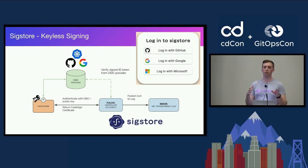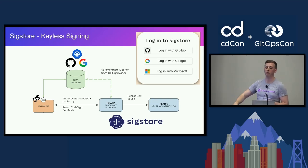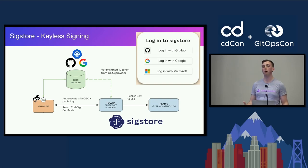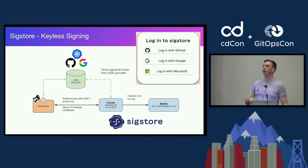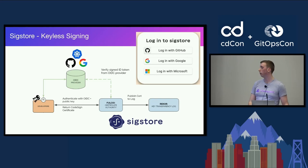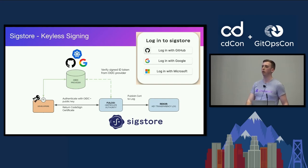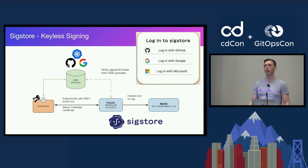You can sign whatever you want in that 10-minute window — git commits, OCI images. Then, whatever we sign is put on a service called Rekor, also part of the SigStore project. Rekor is a transparency log — an append-only, immutable store where we store signatures, usage, and certificates. Later on, even if a git commit was from months ago, we can query Rekor and ask: was this commit actually signed at this time? These are open source components you can run yourself, though the SigStore project also runs public instances for free that any open source project can use.